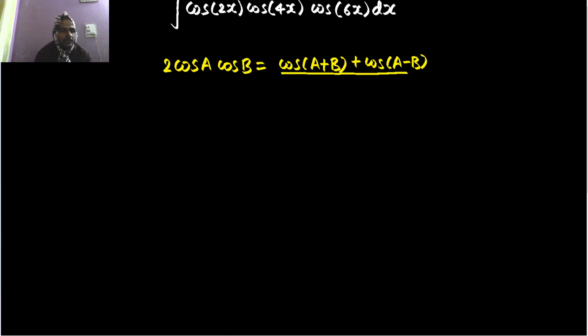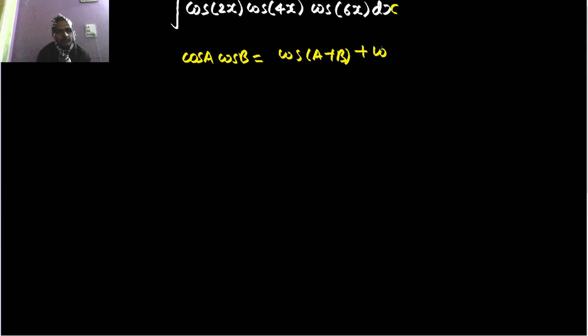Or if you want to write this two, you will have to then remove this. And that is fine also. Cos a cos b is cos of a plus b plus cos of a minus b divided by two. This is fine.